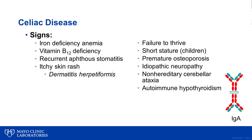Failure to thrive or short stature may be the presenting signs of celiac disease in children. Adults may also develop premature osteoporosis, neuropathy, non-hereditary cerebellar ataxia, or autoimmune thyroid disease.